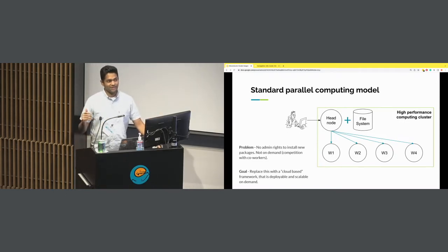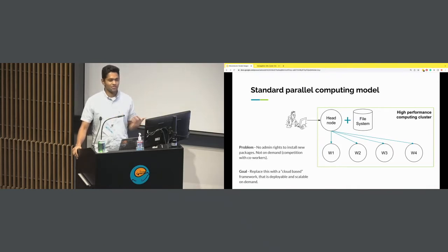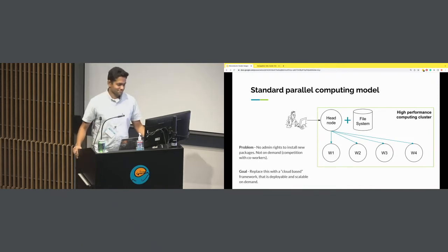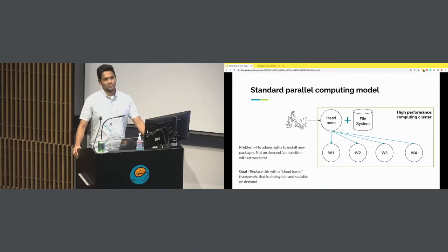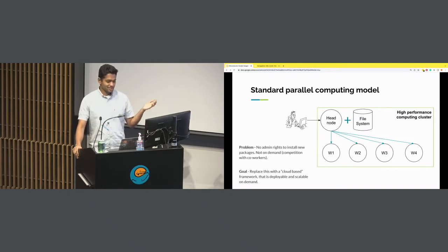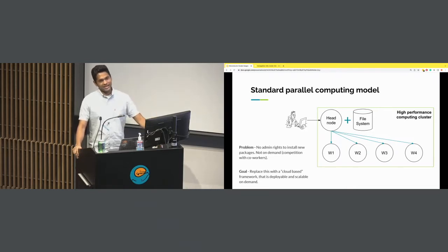The biggest problem is you don't have admin rights on any of these machines. So if you're an R user like me, you'd need to install new packages, new software, new bioinformatics software, and they're usually not available. So you have to beg your admin, and he's going to say he doesn't have time. Then you compete with your coworkers. There are wait times because someone's going to take up the largest node and use all the compute resources. And every worker node needs to have the same set of software installed, so the admin has to do something radical.